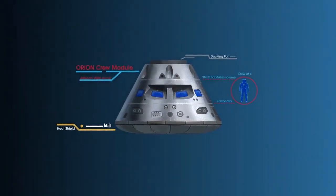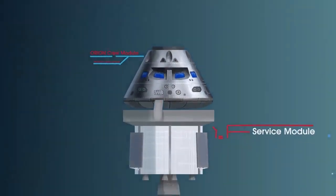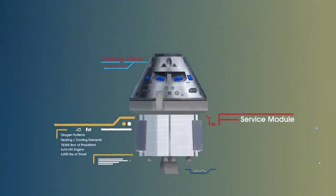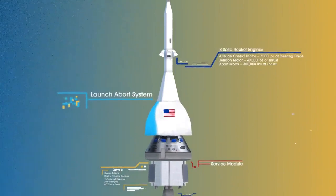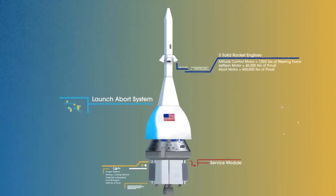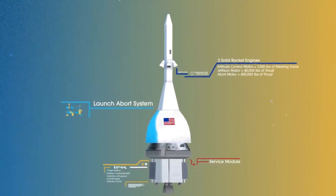The crew module, where up to four astronauts will live and work throughout the flight. The service module, with life-support systems for the crew and its own engine and fuel reserves, and a launch abort system, with engines capable of pulling the crew module to safety during launch should anything go wrong.